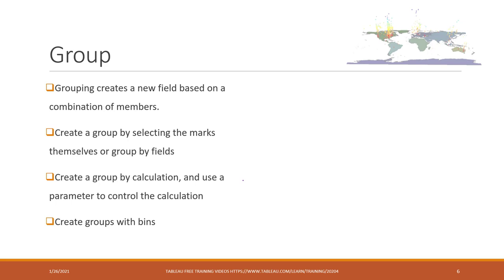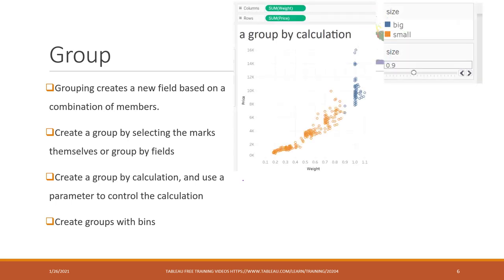We can also create groups with bins, which is very handy. Here is one example from a previous lab where we want to show diamonds that are big or small. We group them into different categories, show different colors, and create a parameter so that the user can control the parameters and the colors will be different.